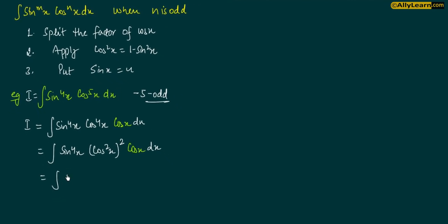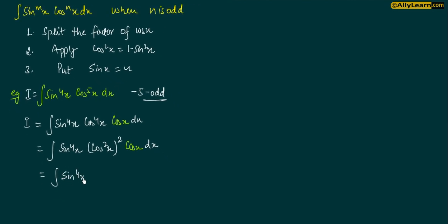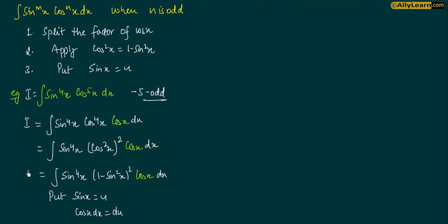Now, using the formula cos²x = 1 - sin²x, we will have sin⁴x · (1 - sin²x)² · cos x dx. Now let us substitute sin x equal to u, so cos x dx = du. तो I becomes u⁴ · (1 - u²)² du. अब bracket खोल के इसे आराम से solve कर सकते हैं.